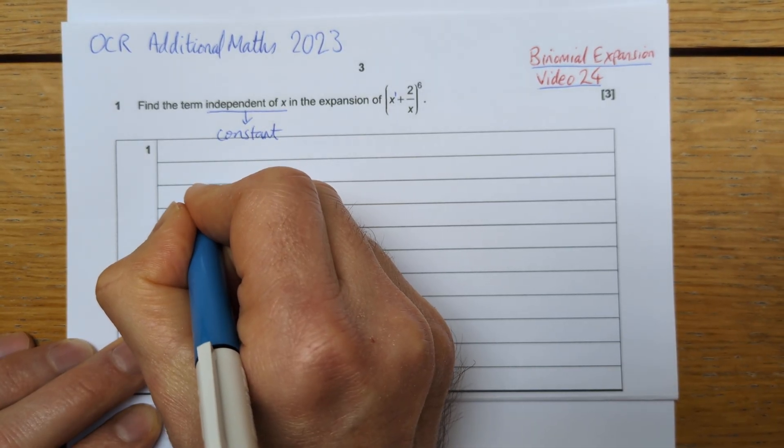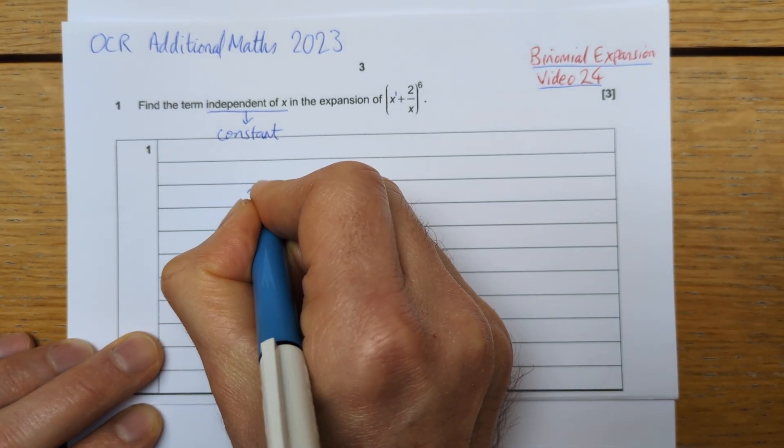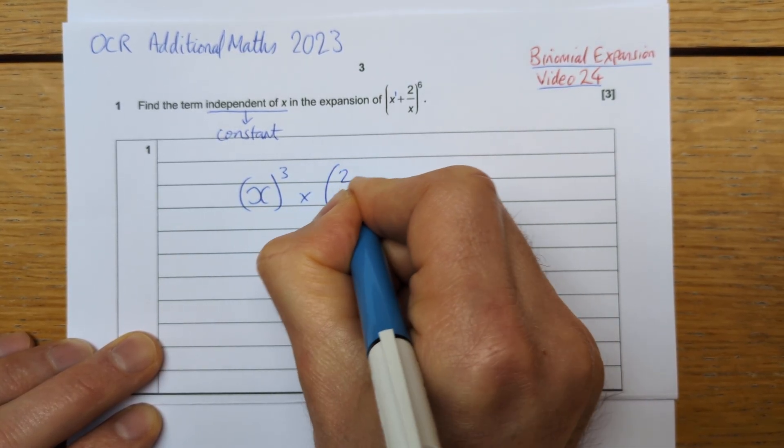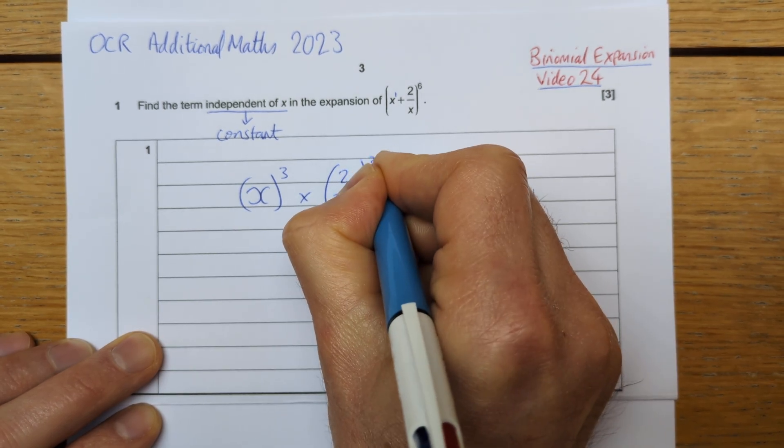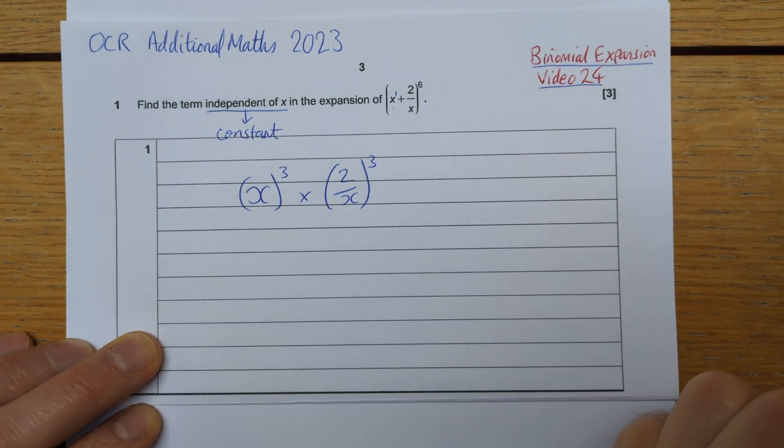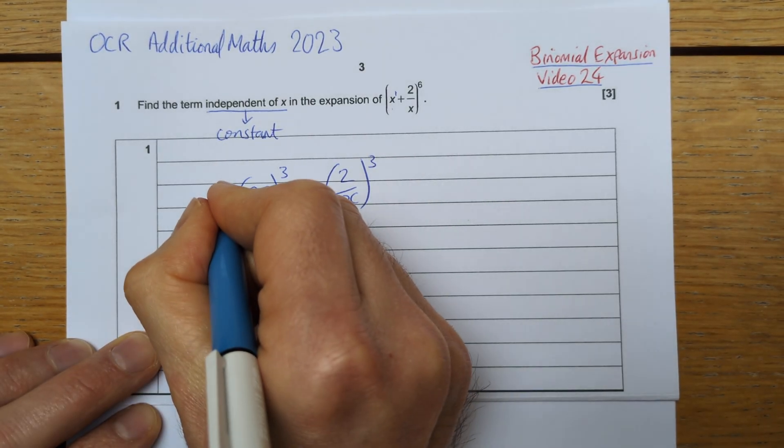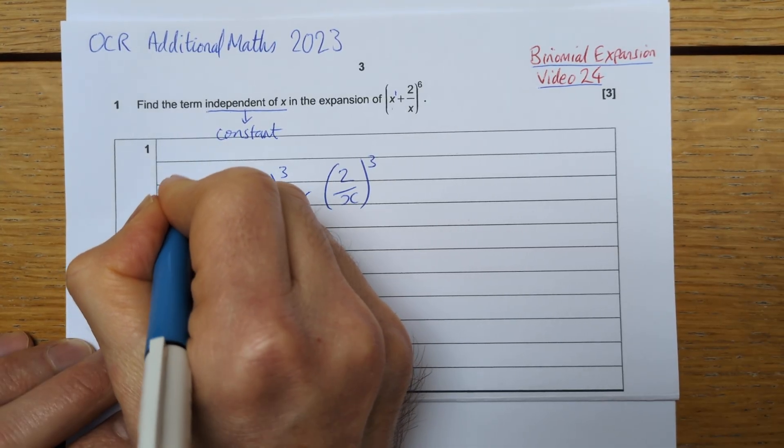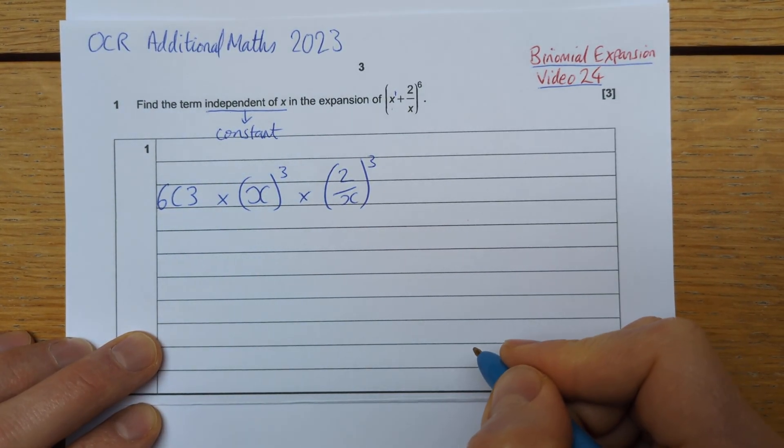So I'm going to do x to the power of 3 multiplied by 2 over x also to the power of 3. I'm choosing 3 of these and 3 of these from the 6 brackets. Now, that could happen in a multiple number of ways. That could happen, in effect, in 6 choose 3 number of ways.